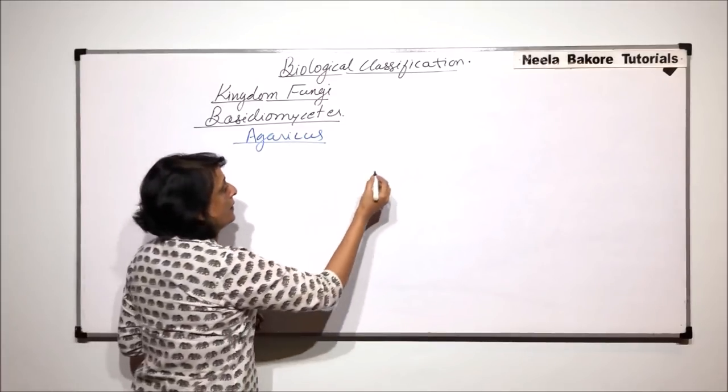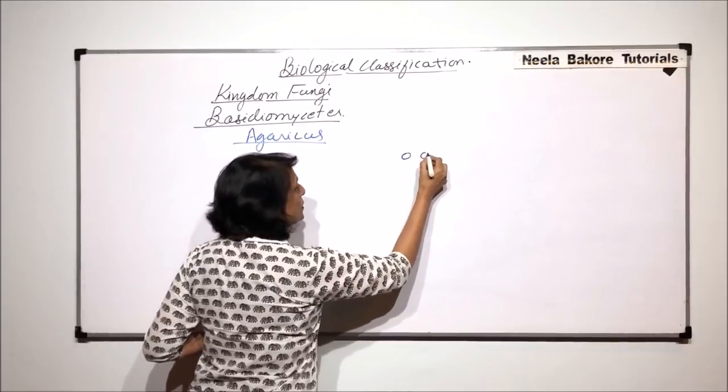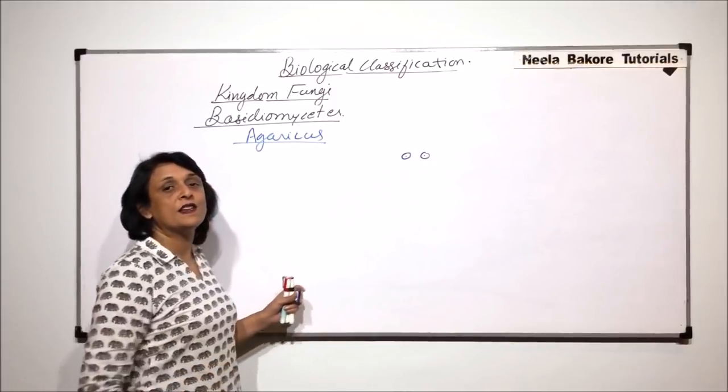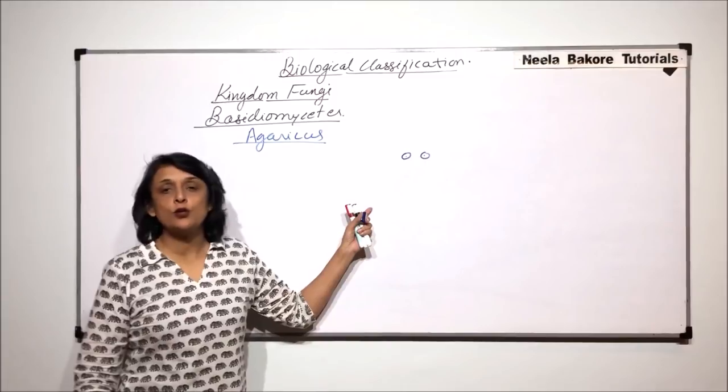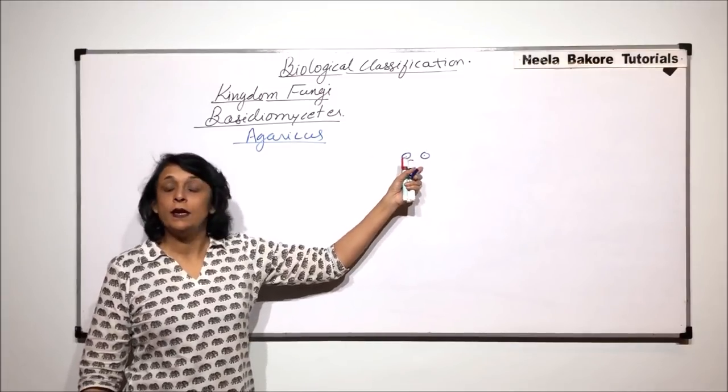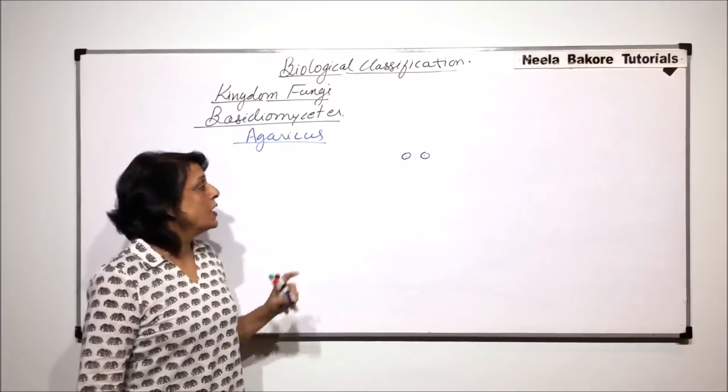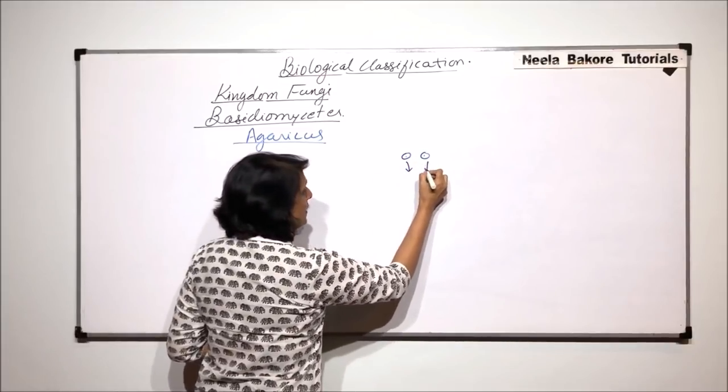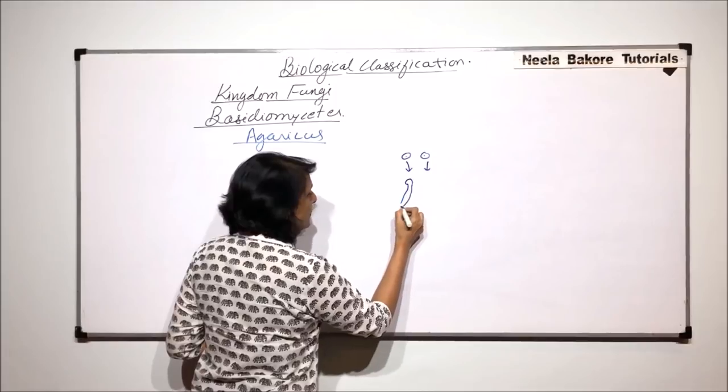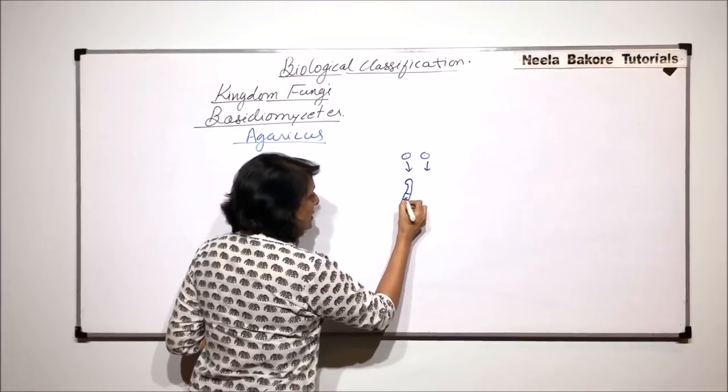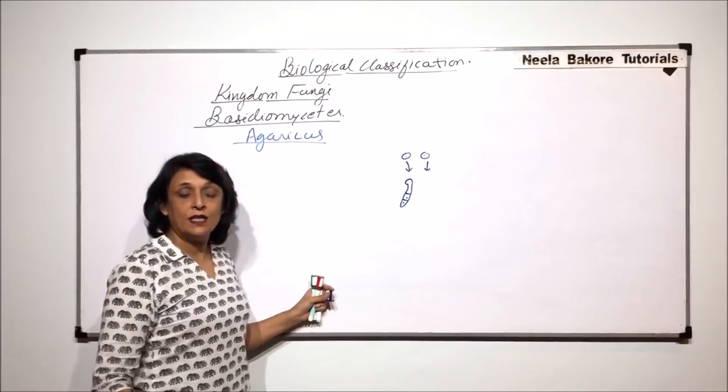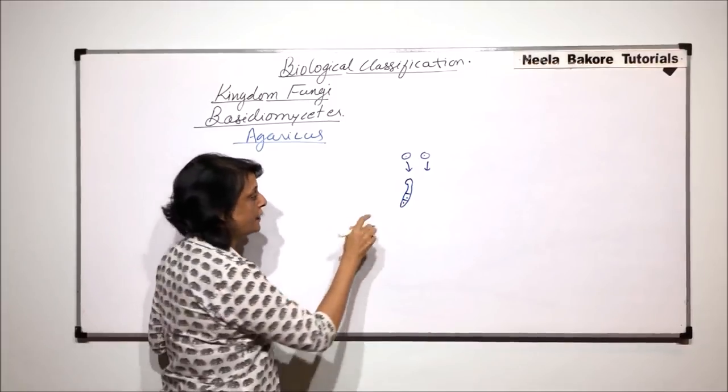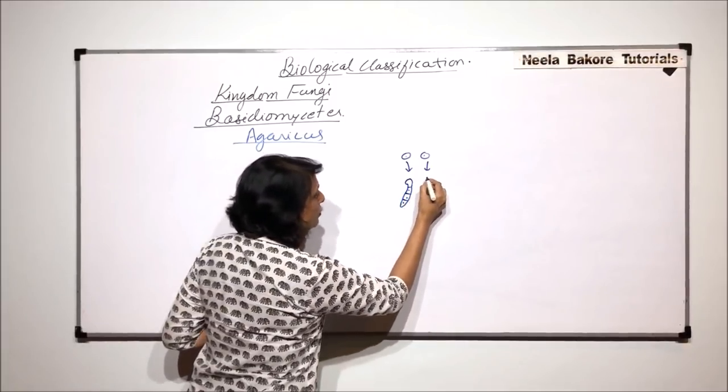What we saw was that there are spores which are released and purposefully we are starting from the spores so that we come back to the point where these spores are produced. When these spores are formed, these spores germinate to produce segmented, that means with septa hyphae which are uninucleate.